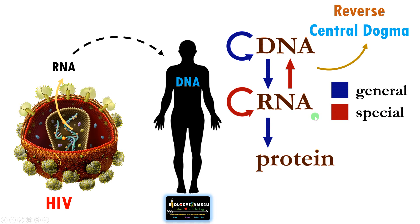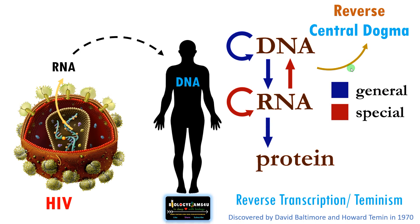This is called reverse central dogma because the reverse is happening — DNA is synthesized from RNA. This process is also called reverse transcription, since the formation of RNA from DNA is called transcription and the reverse is happening here. It was discovered by Baltimore and Temin, and is therefore also called Teminism.